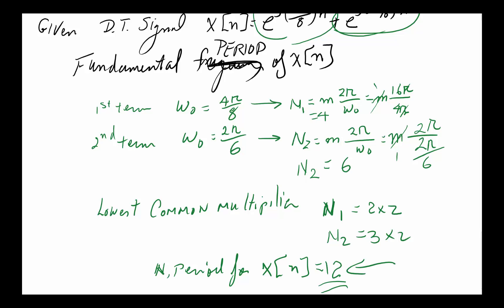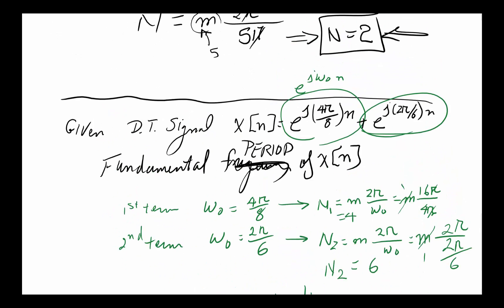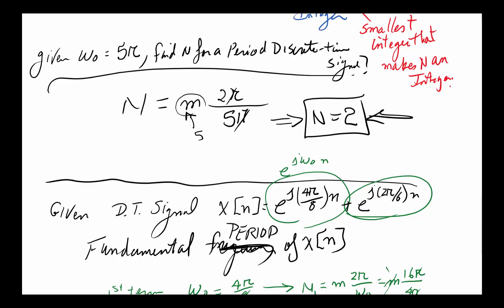That brings us to the end of introducing discrete-time complex exponential sinusoidal signals, and also discussing the need for the extra integer m to ensure that N is always an integer.